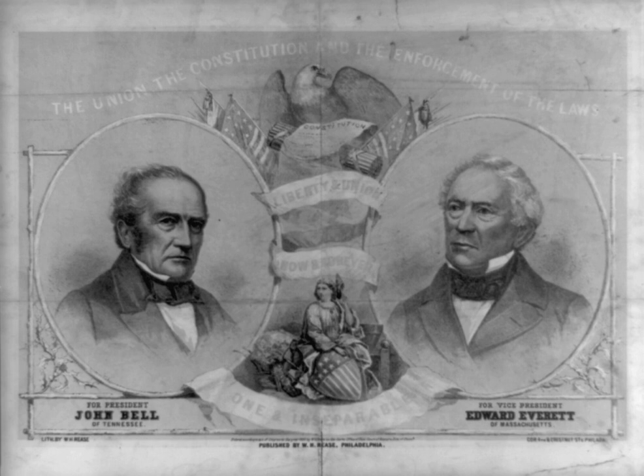A predecessor of the Constitutional Union Party, the Unionist Party, was founded in 1850 by Georgia politicians Robert Toombs, Alexander Stephens, and Howell Cobb to support the Compromise of 1850 and reject the notion of Southern secession. This party united Southern Whigs and Democrats under the Georgia platform, which affirmed Georgia's acceptance of the Compromise as a final resolution to the issue of slavery.